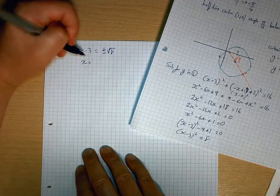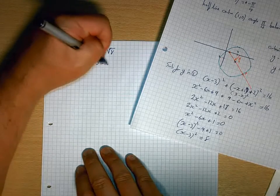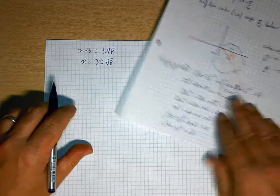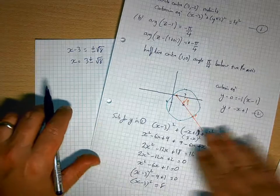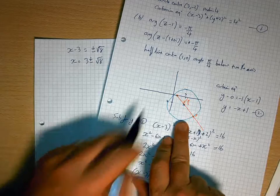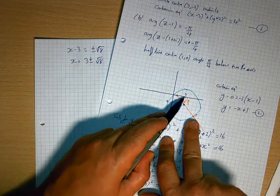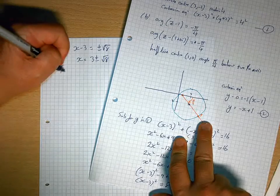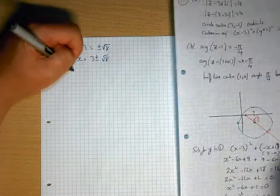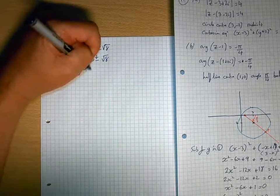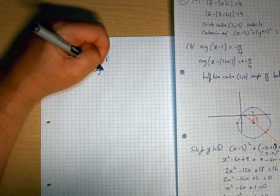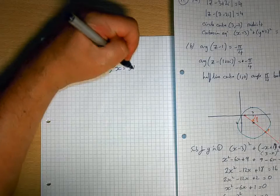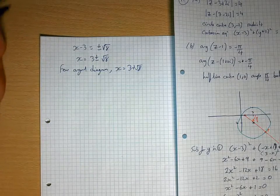So x equals 3 plus or minus root 8. Now if you take a look at where that point is there, it's quite clear 3 is there. So from Argan diagram, x is going to be 3 plus root 8.